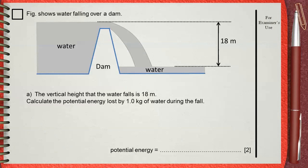Figure shows water falling over a dam. The vertical height that the water falls is 18 meters. Calculate the potential energy lost by 1 kg of water during the fall.